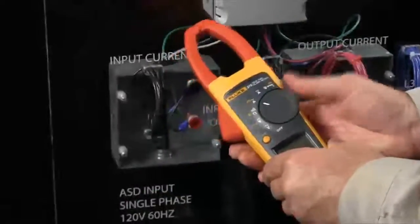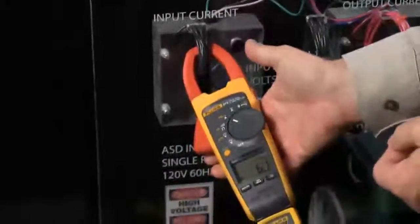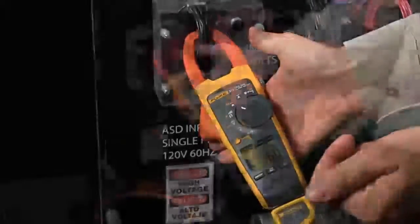Simply set the dial to measure AC current, place it around your conductors and you clearly see your deflection on the screen. Right now we're reading six amps.